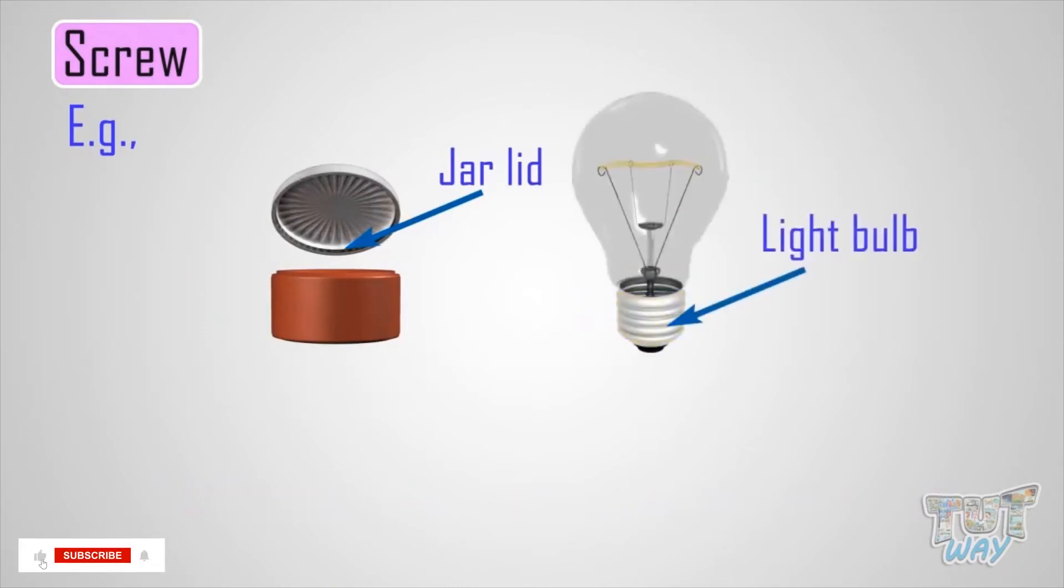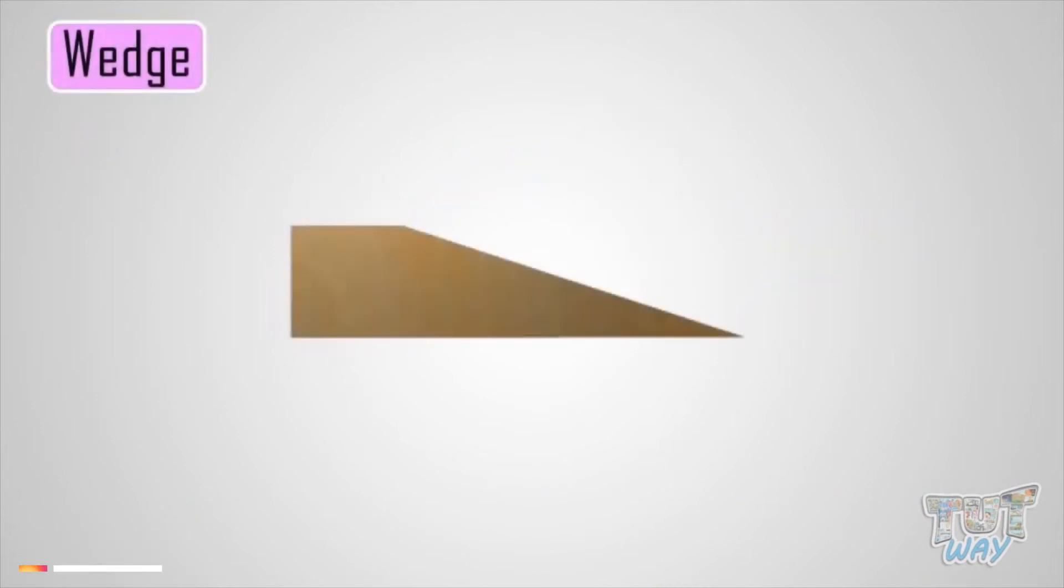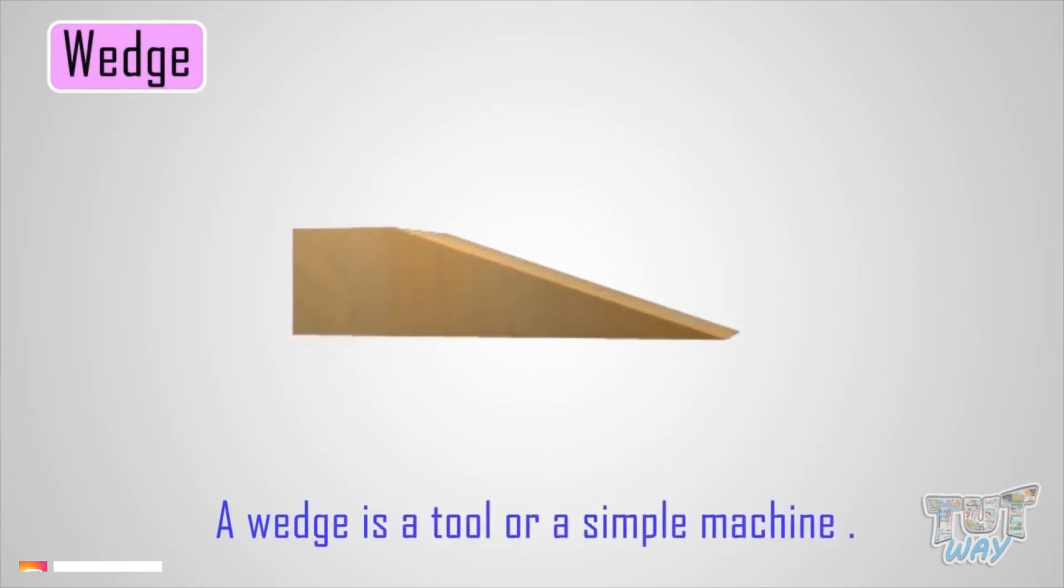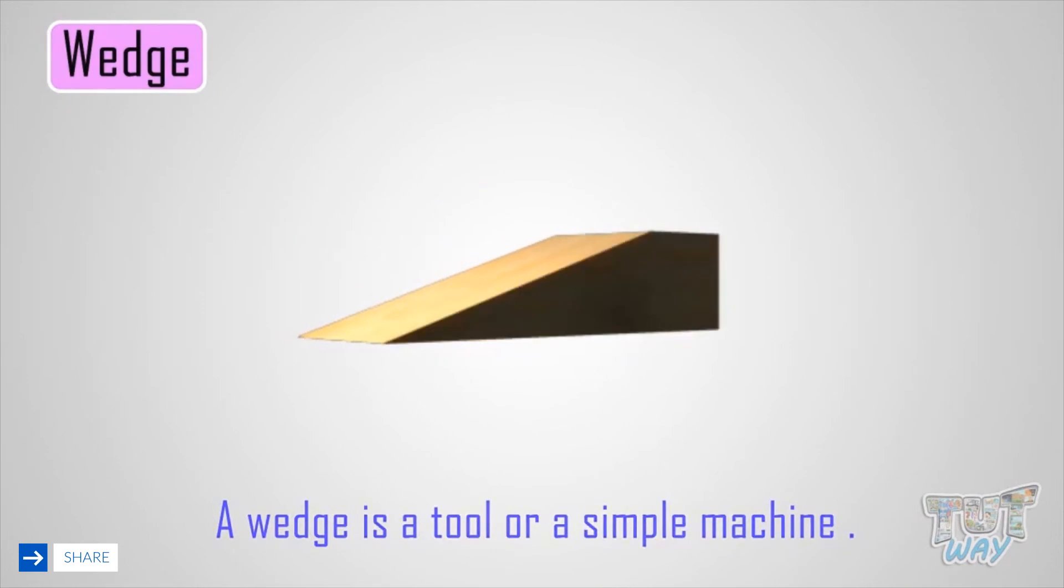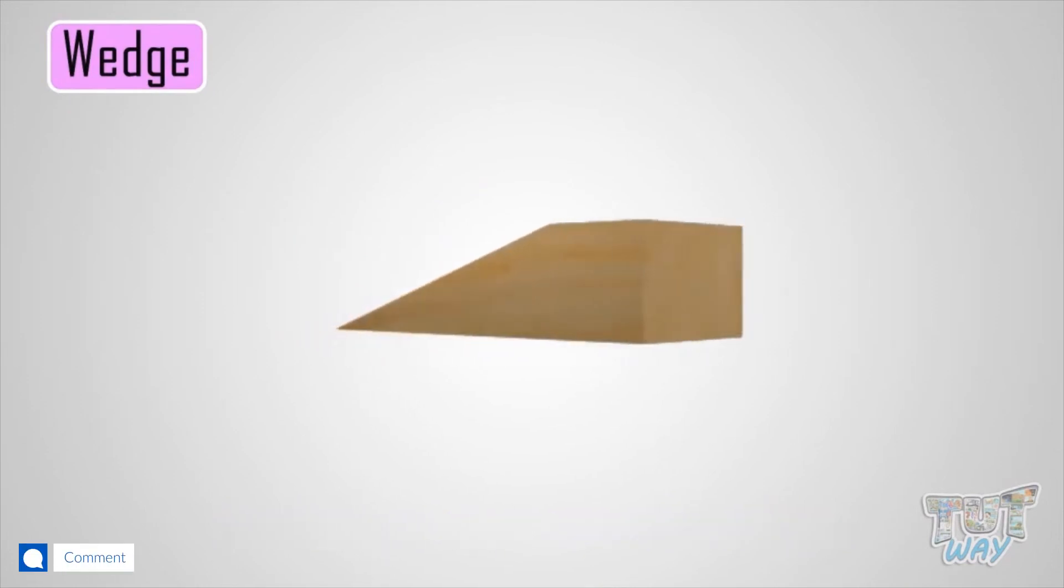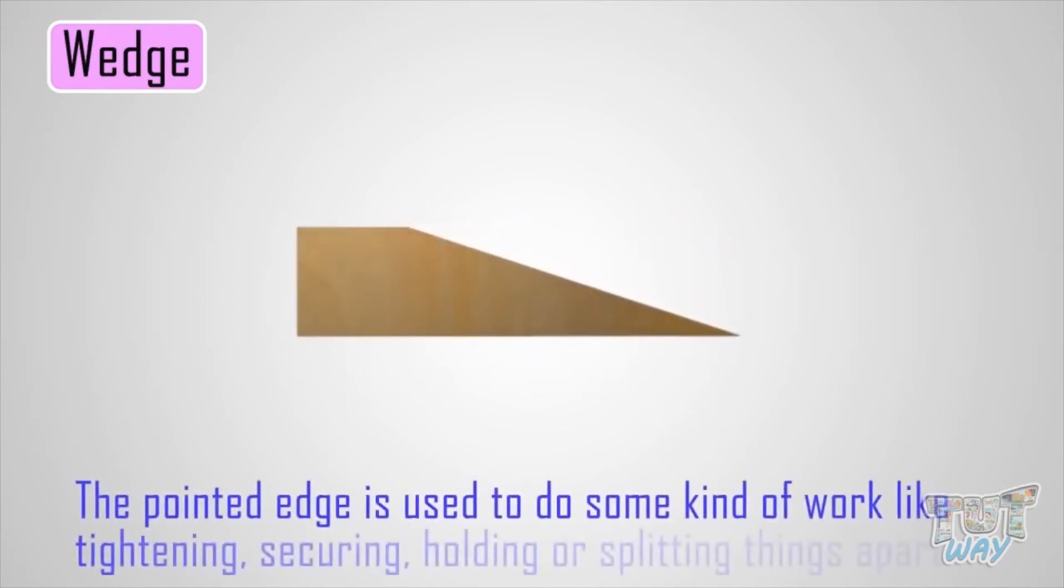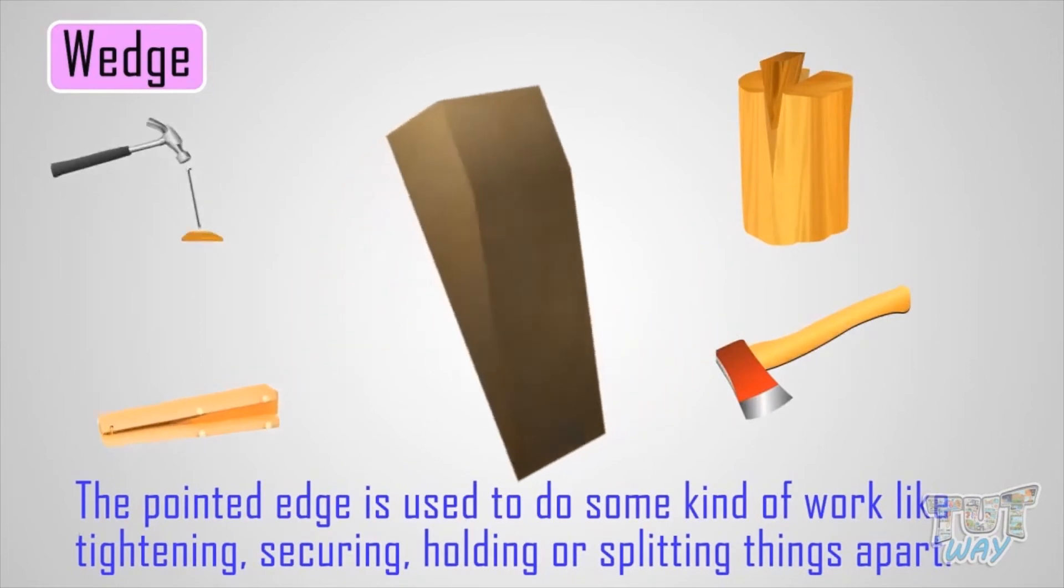Now let's learn another simple machine which is a wedge. A wedge is a tool or simple machine that consists of two inclined planes at some angle making a pointed edge. The pointed edge is used to do work like tightening, securing, holding, or splitting things apart.